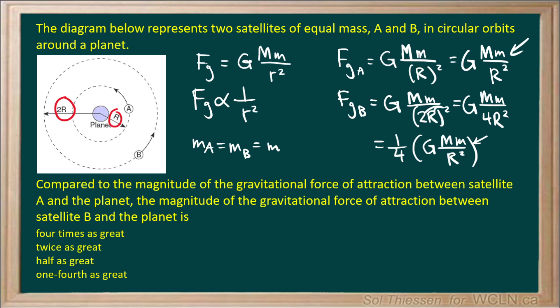This expression and the previous expression are the same, so the force of gravity acting on satellite B is one-quarter the force of gravity acting on satellite A. The correct answer is one-fourth as great. This goes back to the inverse square law governing the relationship between the force of gravity and the distance between the masses. Double the distance, the force is one-quarter; triple the distance, the force would be one-ninth, and so on.